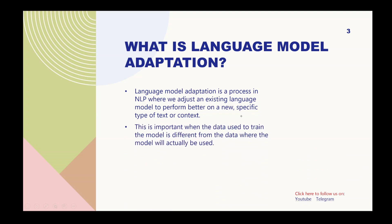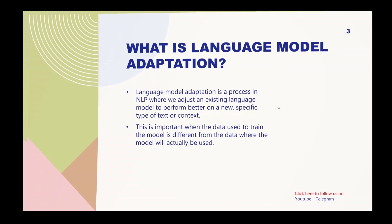The second important point: language model adaptation is needed when the data used to train the model is different from the data where the model will actually be used. While creating a language model you train it on general data, but later if you want it to perform better in a specific domain, the new data is different from what was used previously.